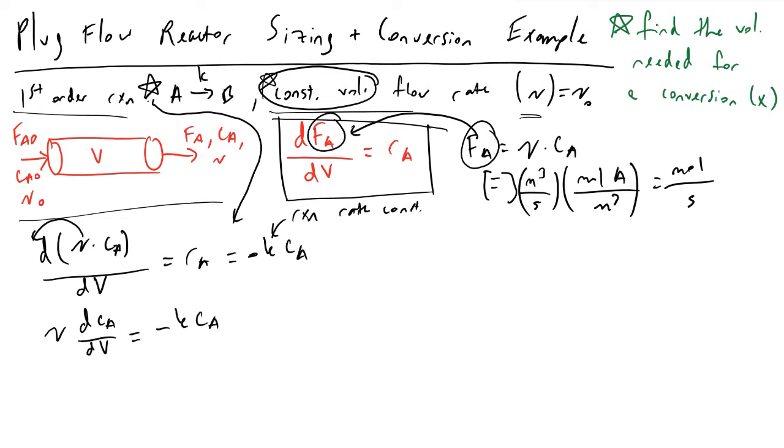If I rewrite this we would now have v times dCA/dV is equal to minus k times CA. If you haven't taken calculus in a while, this technique that we're about to do is called separation of variables. What that basically means is that we will isolate all the terms that are functions of CA on one side and all the terms that are functions of volume on the other side. What this leads us to is we'll have (1/CA) dCA equals minus (k/v) dV.